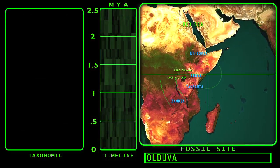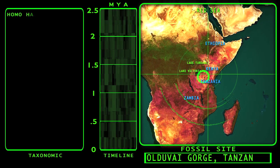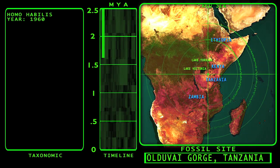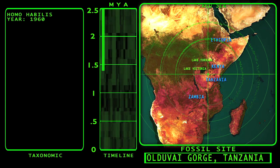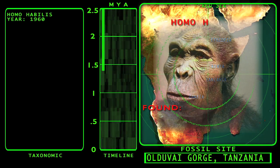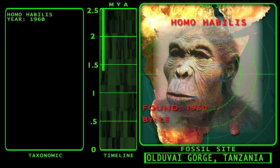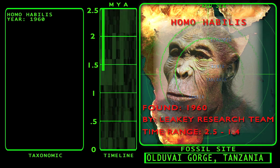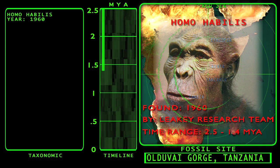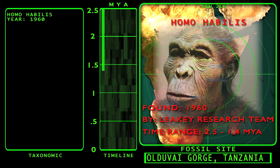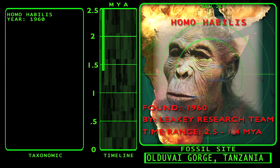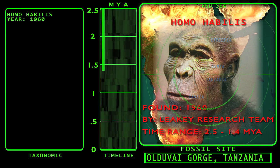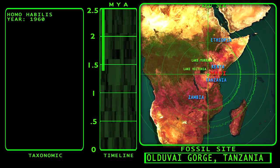The earliest species assigned to the genus Homo is Homo habilis. The first fossil find designated Homo habilis was found in 1960 in Olduvai Gorge in Tanzania by Jonathan and Mary Leakey. The time range of Homo habilis is approximately 2.5 million to 1.4 million years in the past.